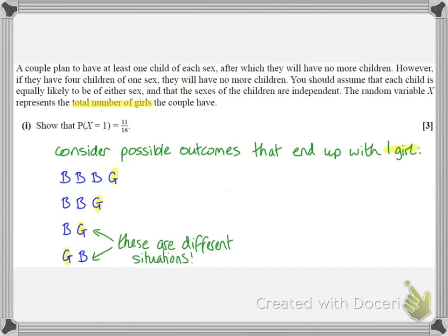And it's worth noting that boy, girl and girl, boy are 2 different situations. So we were given in the question that it was equally likely that the child would be of either sex. So we've got the probabilities there. Probability of a girl is a half and probability of a boy is a half.